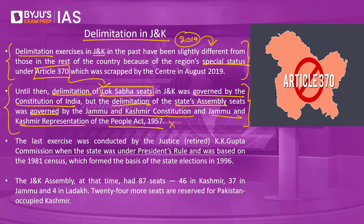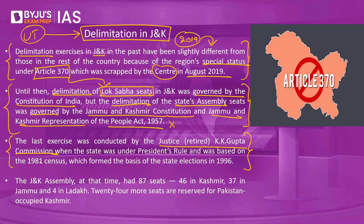This anomaly was corrected after the special status of J&K was revoked under Article 370 in 2019, making a new delimitation exercise necessary for the new union territory. In J&K, the last delimitation exercise had been carried out in the 1990s by the Justice K.K. Gupta Commission, based on 1981 census data, which became the basis of state elections in 1996. Following that, even J&K had frozen delimitation until 2026, in line with the rest of the country.